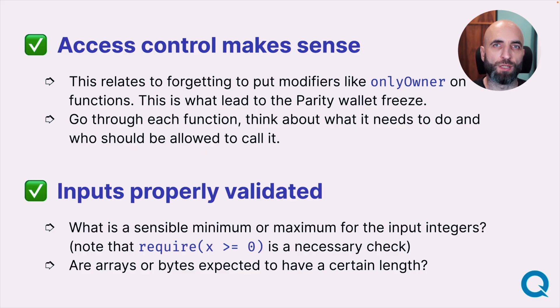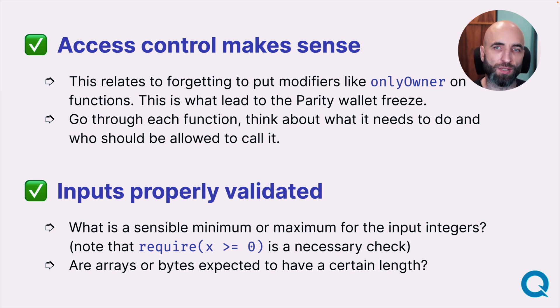For more specific checks: go through each function in your smart contract and think about what it needs to do and who should be able to call it. One mistake can cost you the whole project — the famous Parity wallet freeze was caused simply by forgetting to put an onlyOwner modifier on one function. That's all it takes.